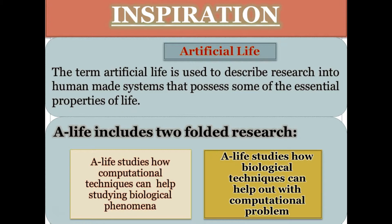We will then be able to relate the problem to nature and find that nature has a fantastic and excellent solution for it. In computational intelligence, we talk about artificial life. Artificial life is basically a human-made system that possesses the essential properties of life.